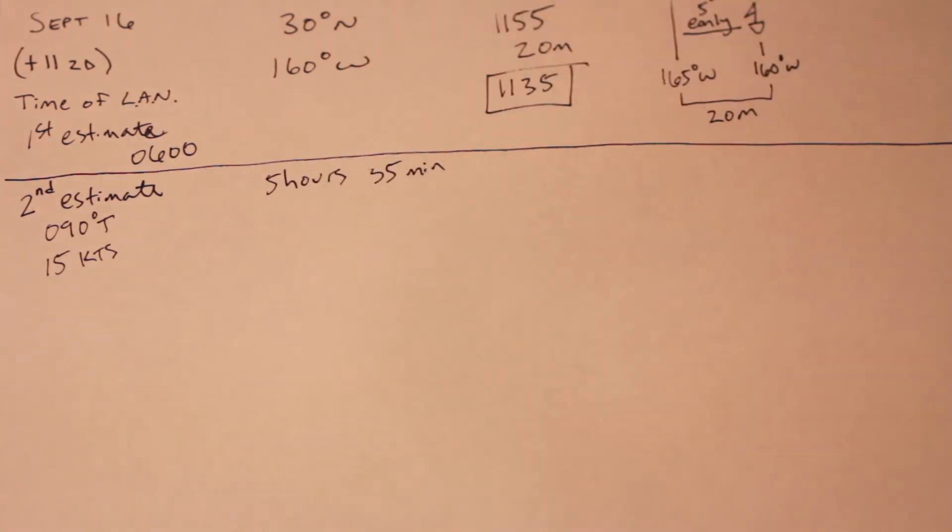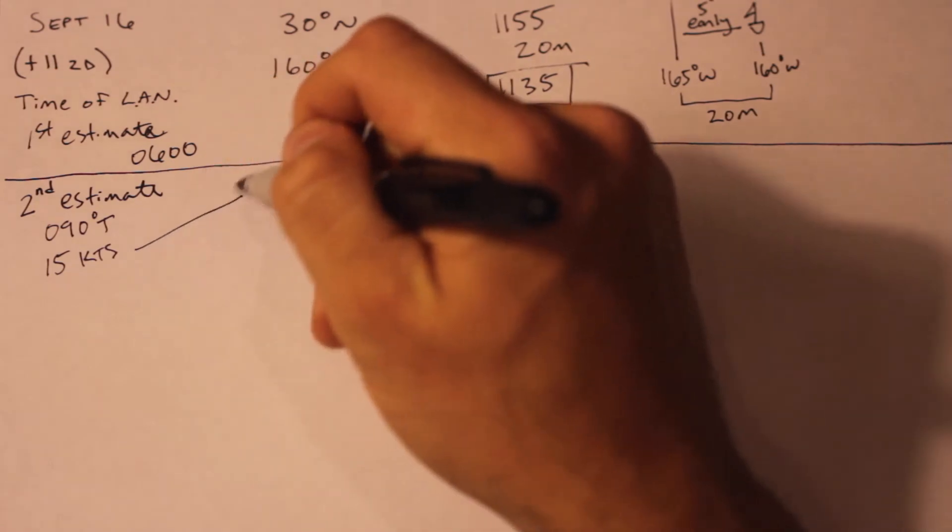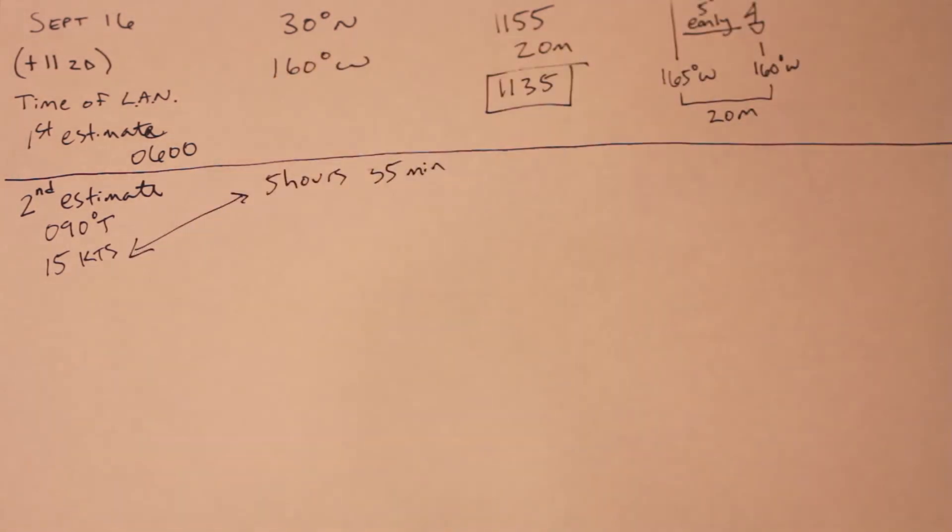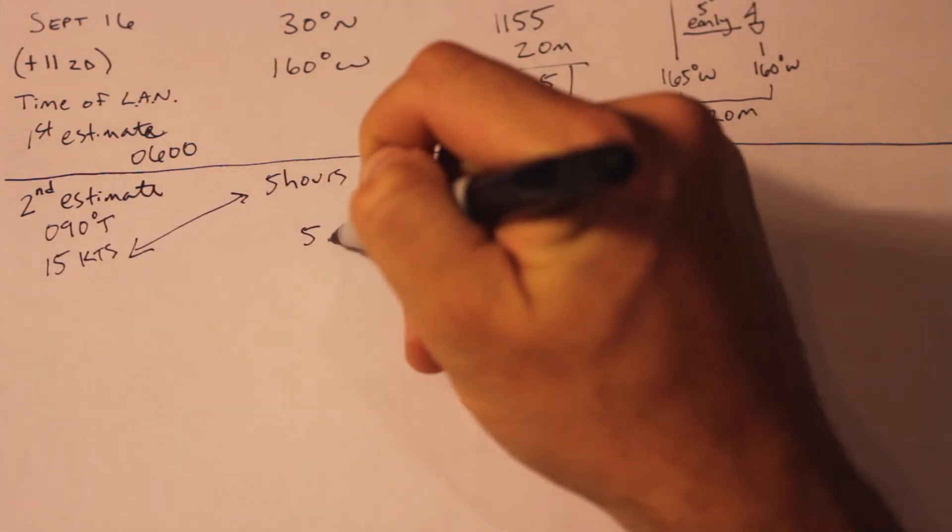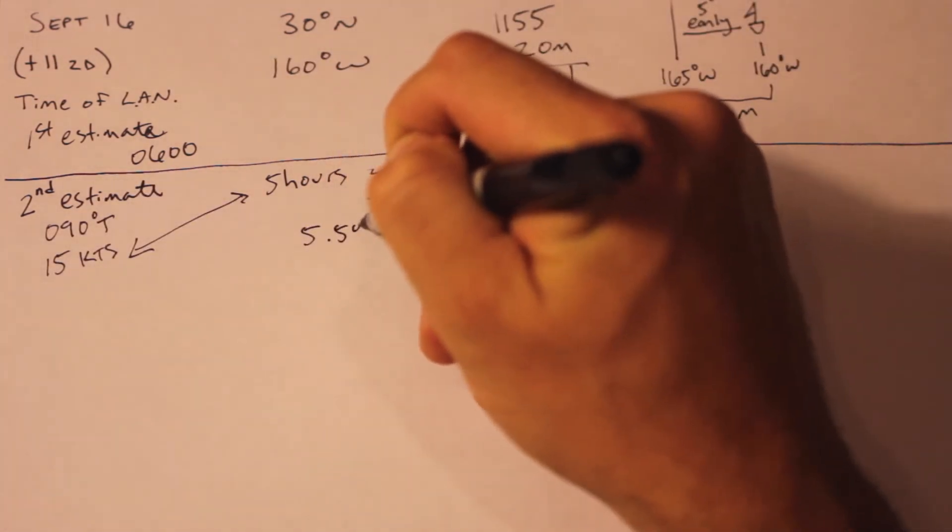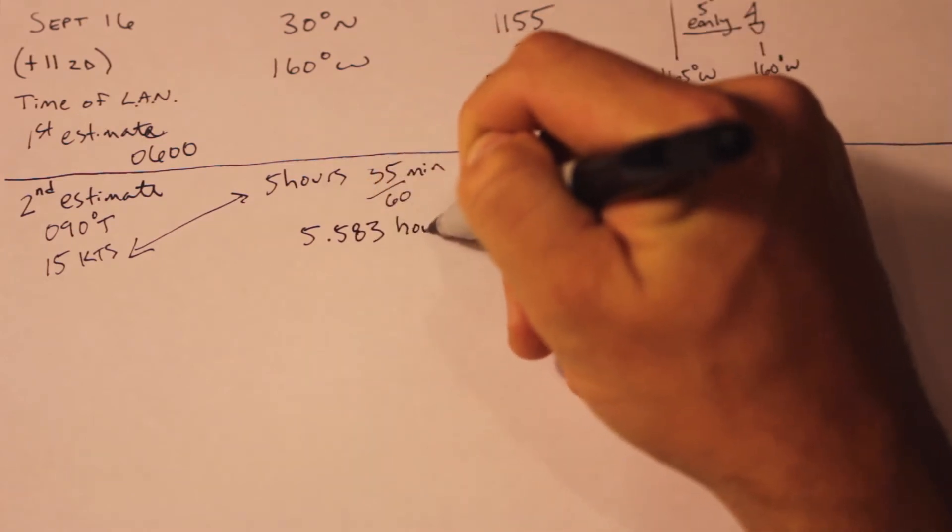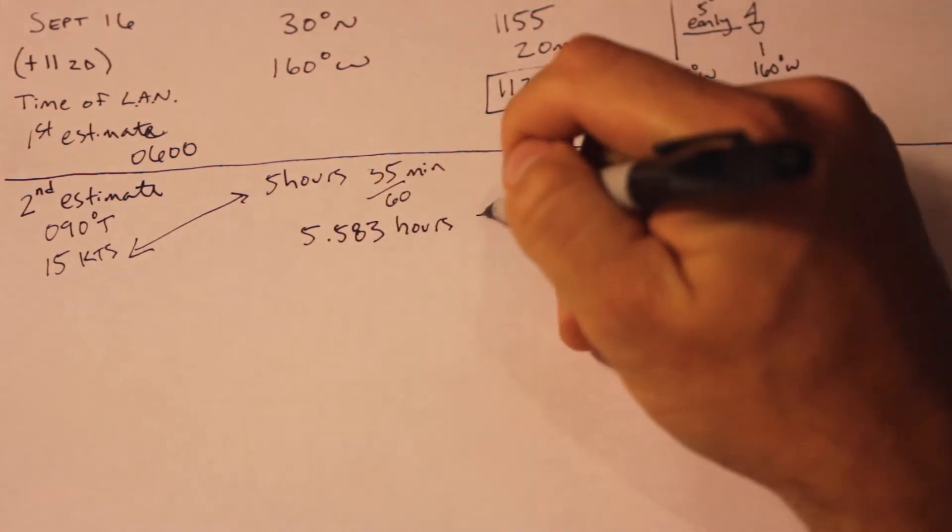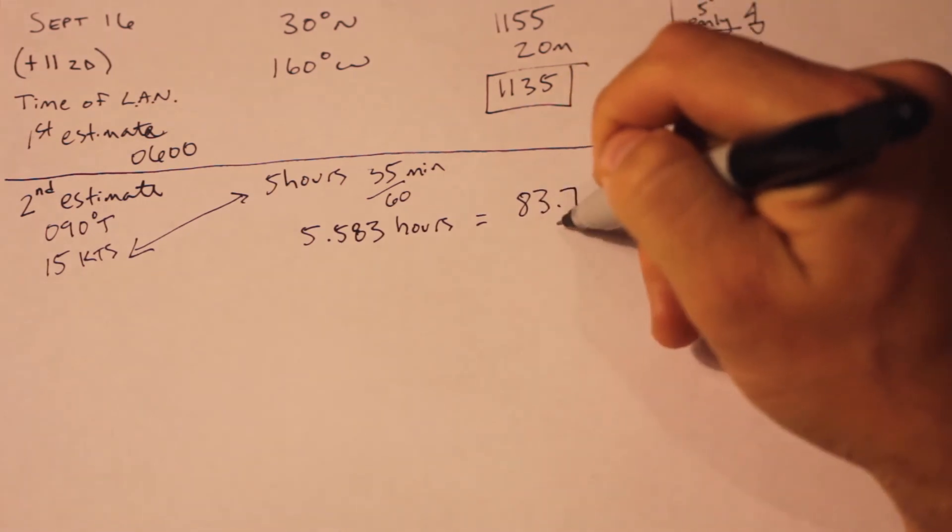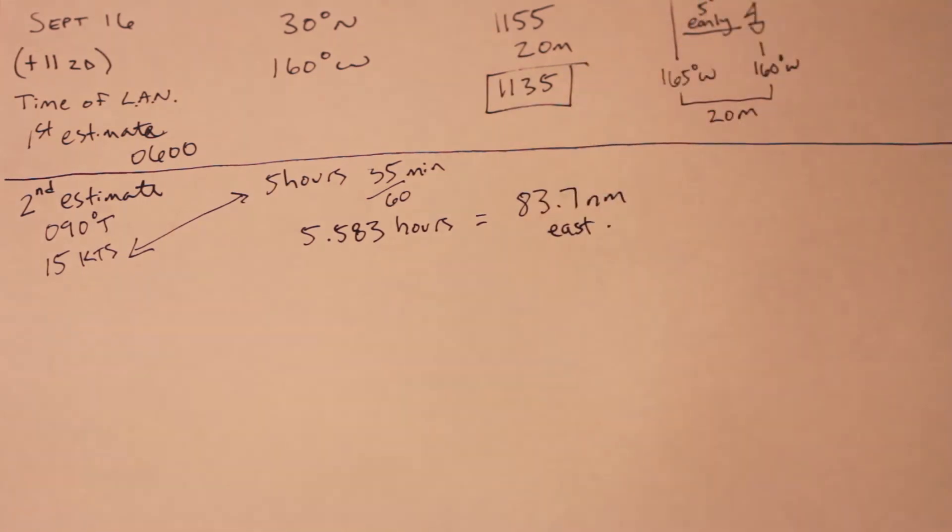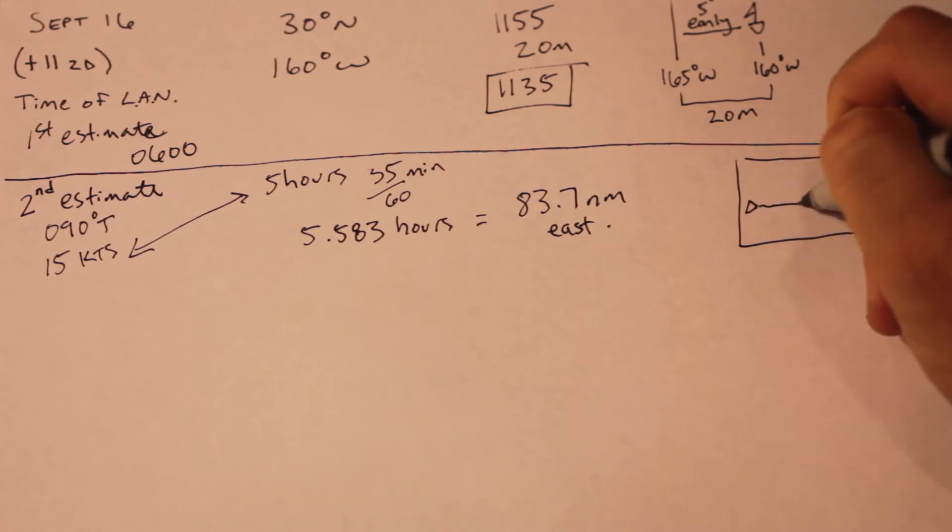In order to get the more accurate second estimate, we need to dead reckon our ship's position from the time of calculation to the time of the first estimate, which is a difference of 5 hours and 35 minutes in this case. So 5 hours and 35 minutes is 5.583 hours. The easiest way to do that is to simply DR your position on a chart, pull out the new DR position for the approximate time of phenomenon, and redo the calculation for that position. This second estimate is usually good enough, down to the minute or so, even for a moving ship.